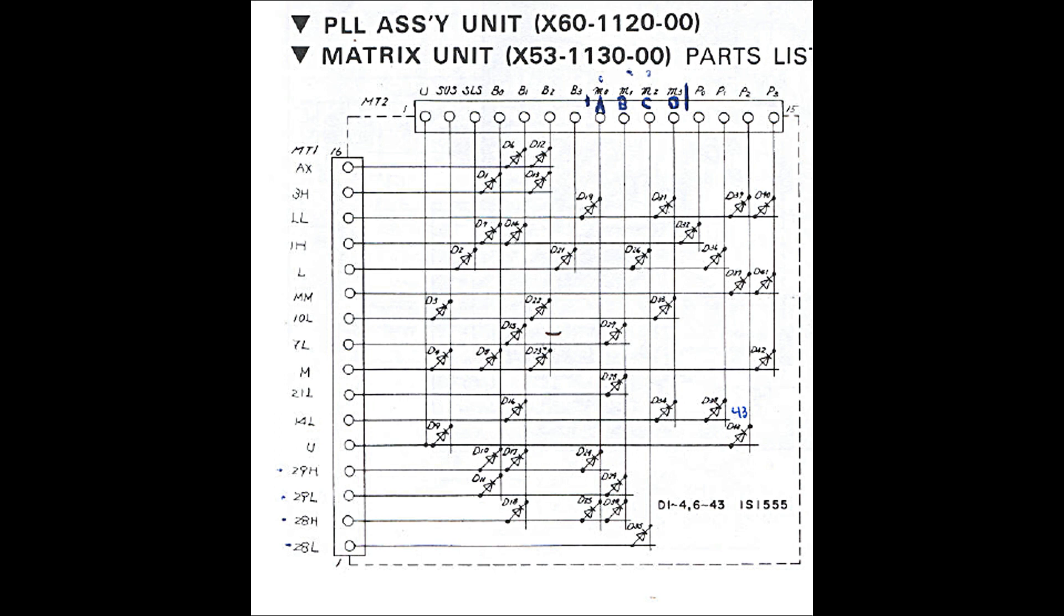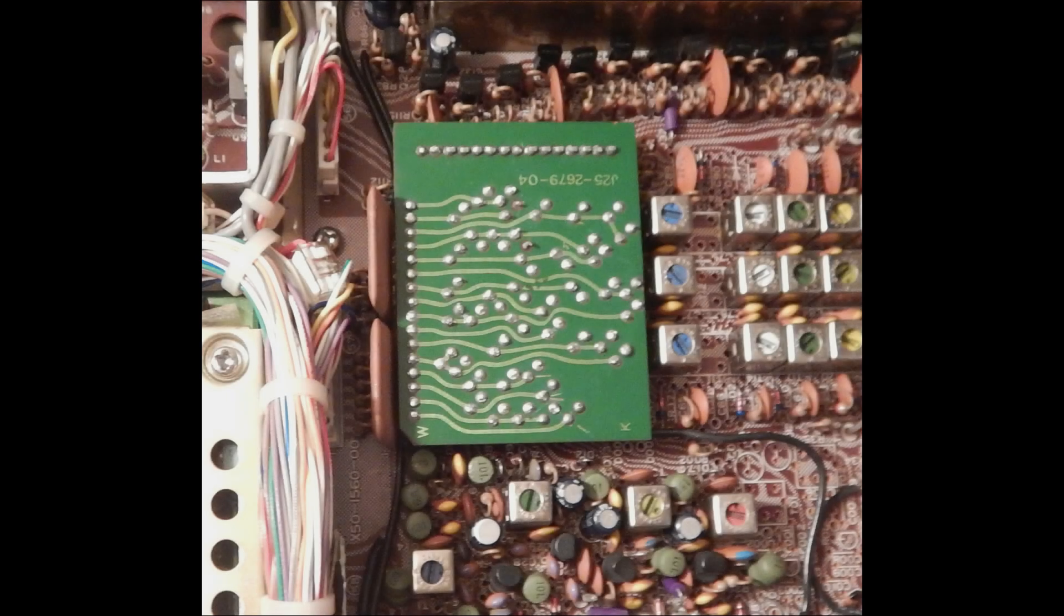In this transceiver, the matrix is in part made of diodes scattered on the main PLL PCB and in part made with a small daughter board called the matrix unit. It is the small daughter board sitting upside down in this picture.